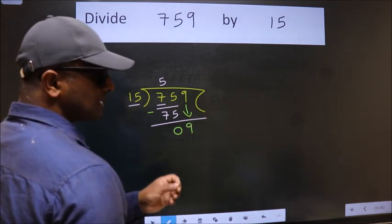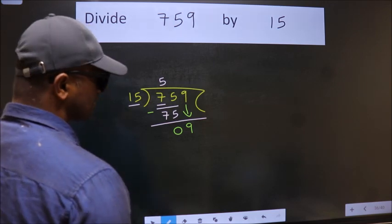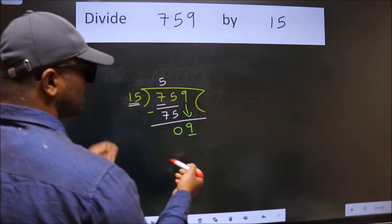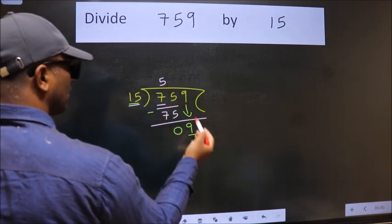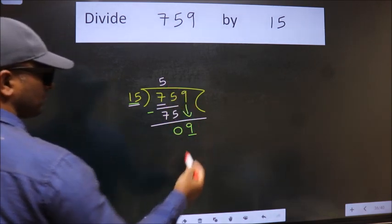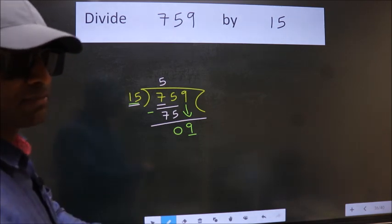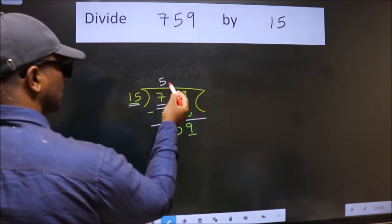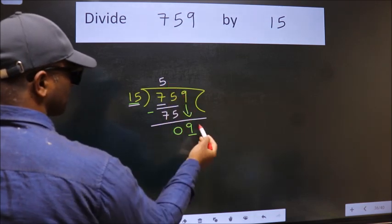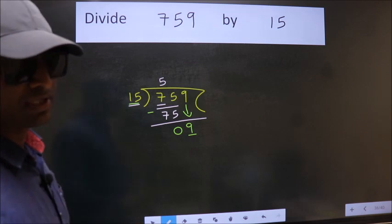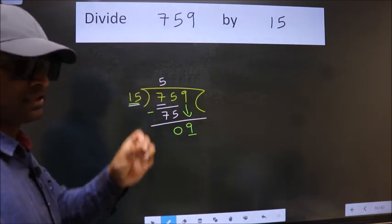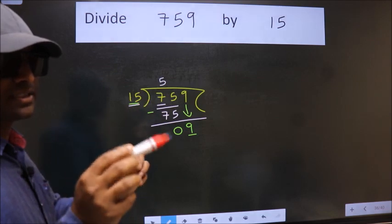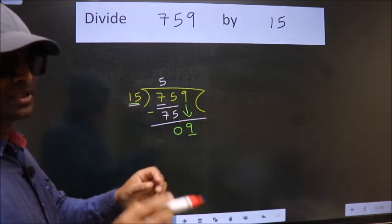After this step, the mistake happens and the mistake is this. Here we have 9, here 15. 9 is smaller than 15, so what many do is they directly put dot take 0, which is wrong. Why is it wrong? Because just now you brought this number down and in the same step you want to put dot take 0, which is wrong. Bring down the number and put dot take 0 both at the same step, you should not do.